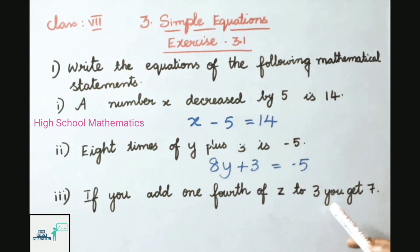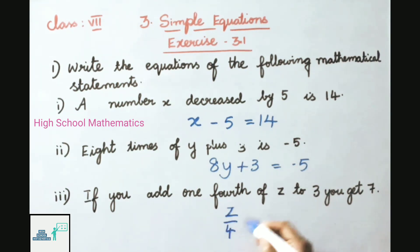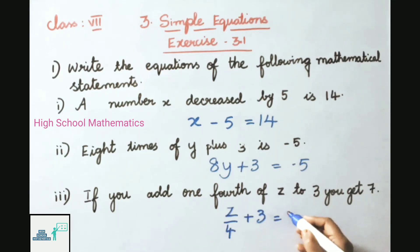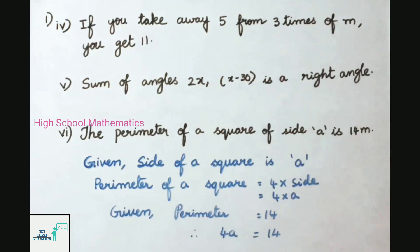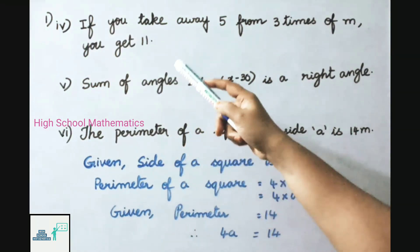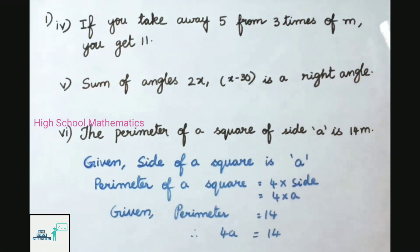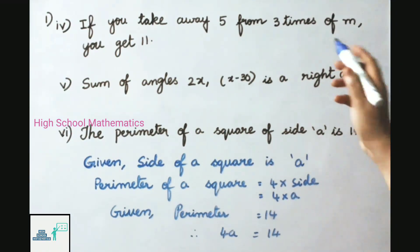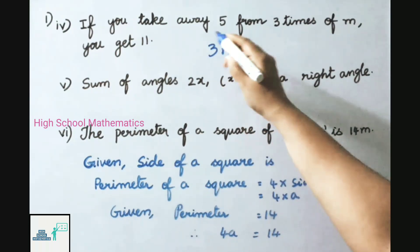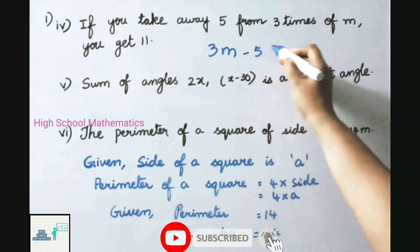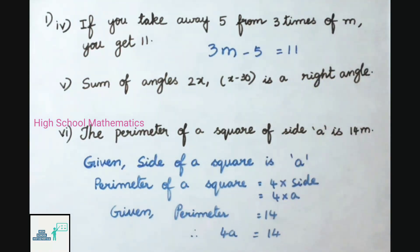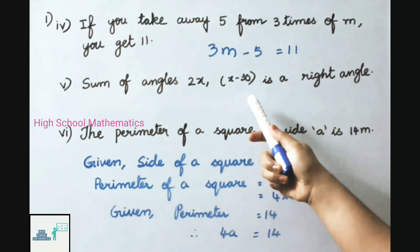Third: if you add one-fourth of z to 3, you get 7. One-fourth of z is z/4, add 3 and we get 7. So the simple equation is z/4 + 3 = 7. Fourth: if you take away 5 from three times of m, you get 11. Three times of m is 3m, take away 5 means minus 5, that equals 11. So the simple equation is 3m − 5 = 11.